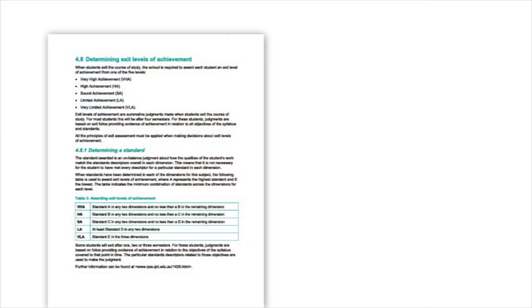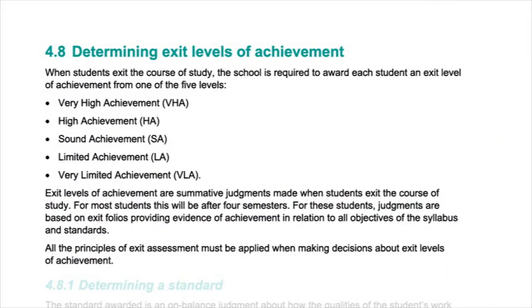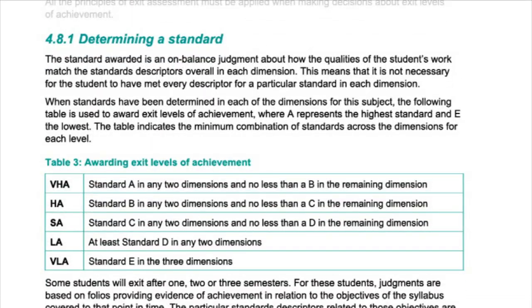Teachers make level of achievement decisions by looking at the on-balance decisions they have made for each of the dimensions or objectives, and then they look at the syllabus to see whether the student responses match a particular level of achievement. The levels of achievement from VLA through to VHA are decided, and the minimum requirements for awarding a level of achievement — for example, for an HA — require a student to receive a B in two different dimensions and no less than a C in the third dimension.